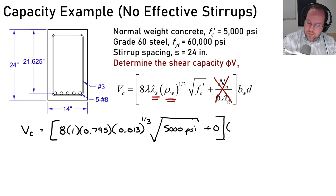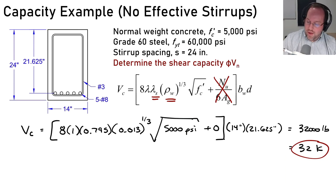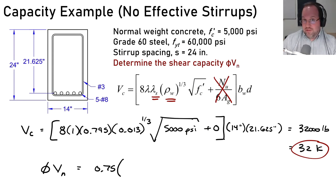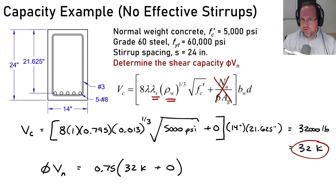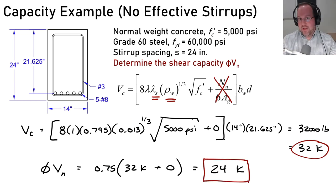This gives V_c = 32,000 pounds = 32 kips. Note that the square root term must use PSI units, not KSI. Our design capacity is phi*V_n = 0.75 × (V_c + V_s) = 0.75 × (32 + 0) kips = 24 kips for this beam with the widely-spaced stirrups.